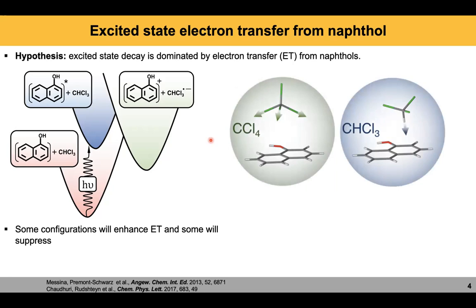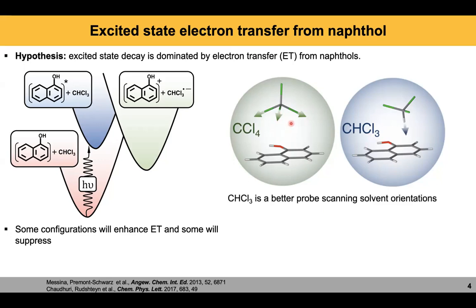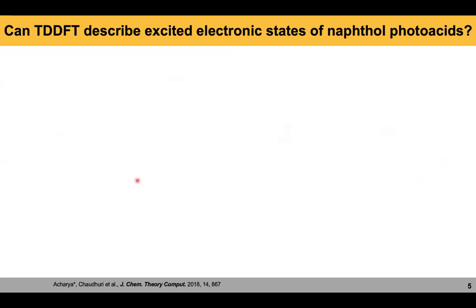Our hypothesis was that when you excite the molecule, you have the excited state of naphthol, and then there is an electron transfer from the naphthol molecule to the solvent. In the charge transfer state, the positive charge is on the naphthol and the negative charge is on the chloroform molecule. Depending on the configuration between solute and solvent, some configurations will enhance electron transfer and some will suppress it. We chose CHCl3 as the solvent because we can use the dipole of the CH bond as a pointer to figure out where the solvent is around the solute.